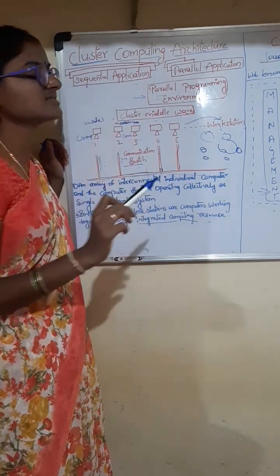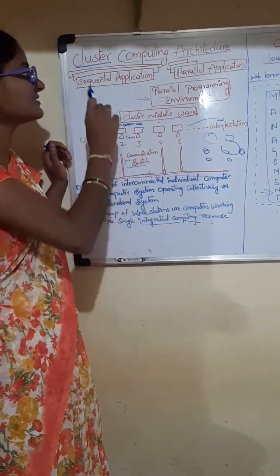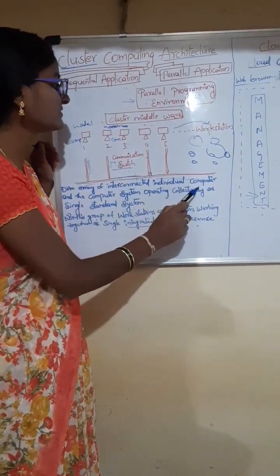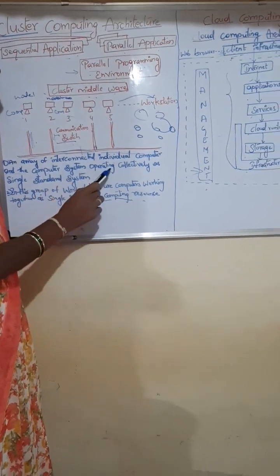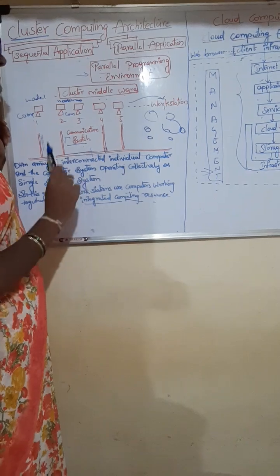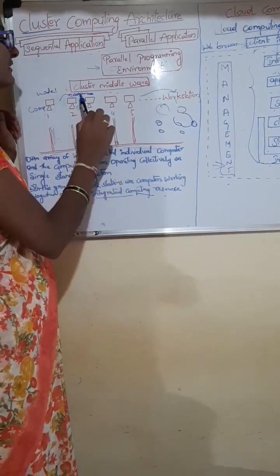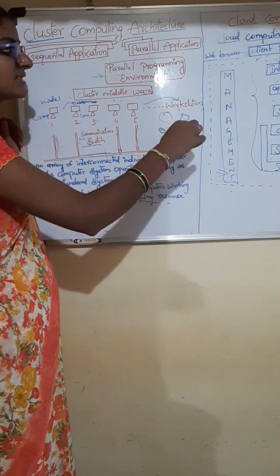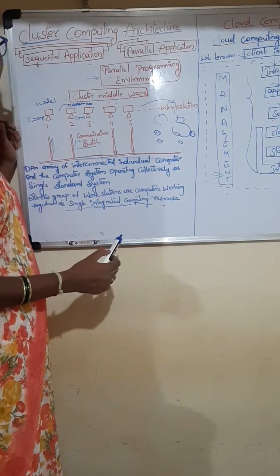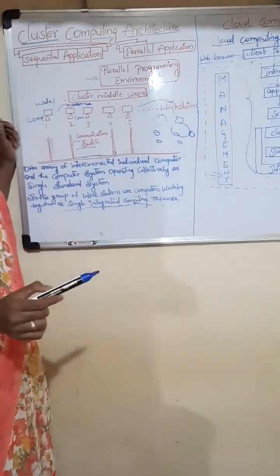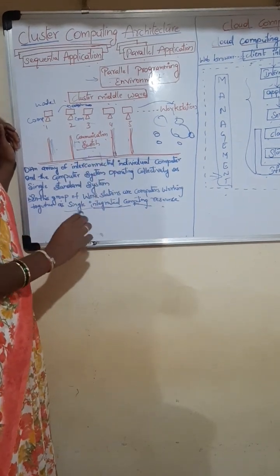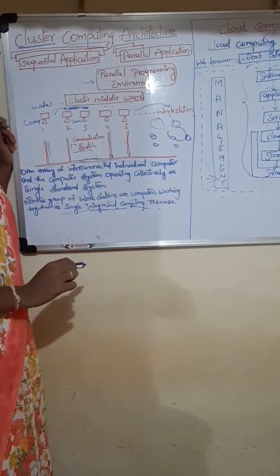Sequential applications are used in a sequential manner. An array of interconnected individual computers operates collectively as a single standard system. Each computer is connected to the workstation, and the group of workstations forms a single integrated computing resource so that it can solve a problem. Each computer is connected to the network via a communication switch. This is the cluster computing architecture.